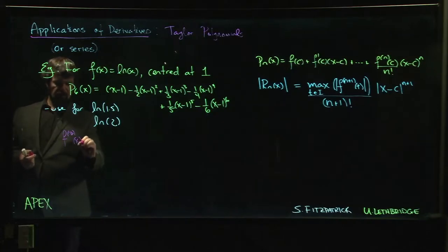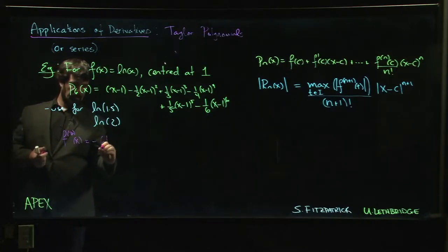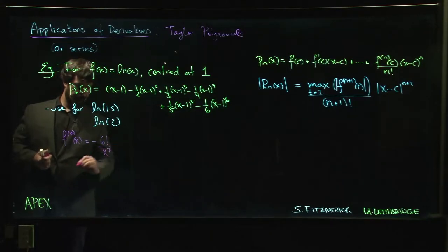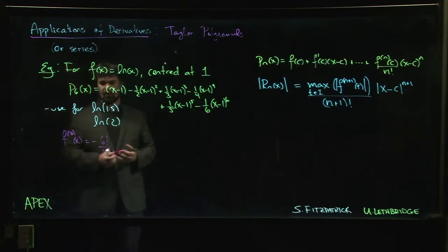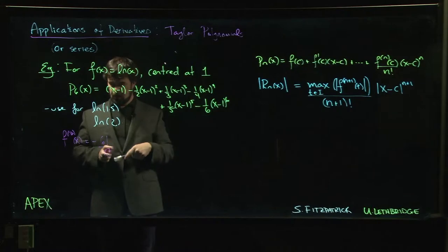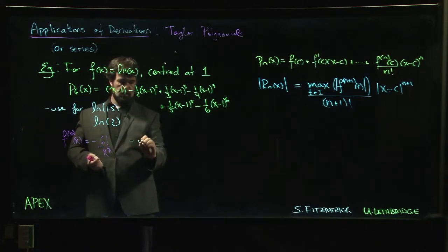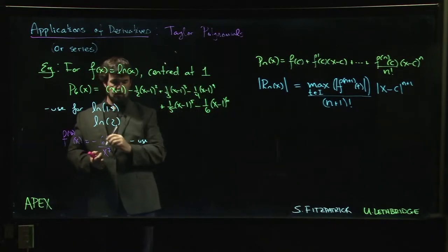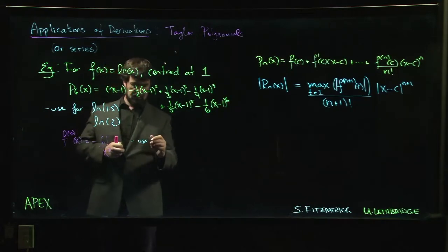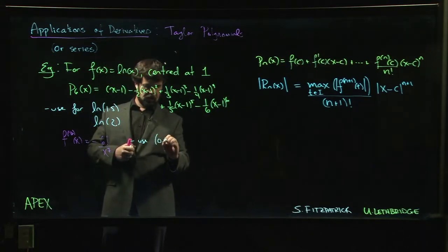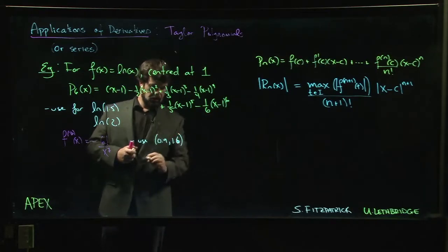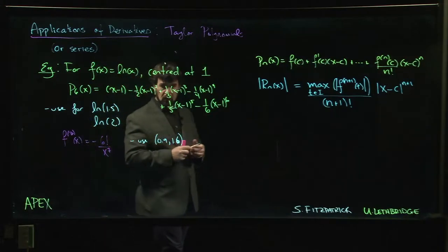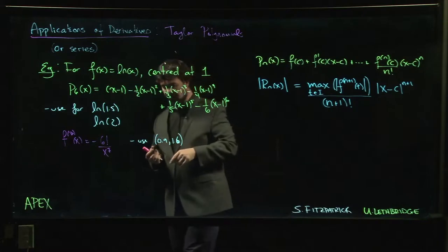We need an interval that contains the center and contains the point that we want to evaluate. So maybe we move like 0.1 either side, so maybe we go like 0.9 to 1.6. And you could, in effect if you wanted to, you could probably go with the interval from 1 to 1.5.